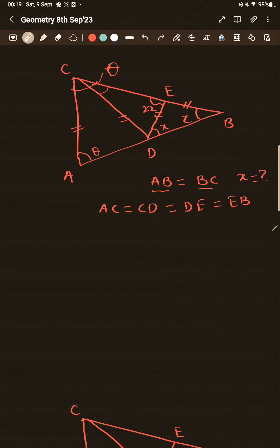these two sides are equal. So this will also be 2X, right? Now this and this are equal. So this is theta. So this will also be theta. Now I can write two equations here.